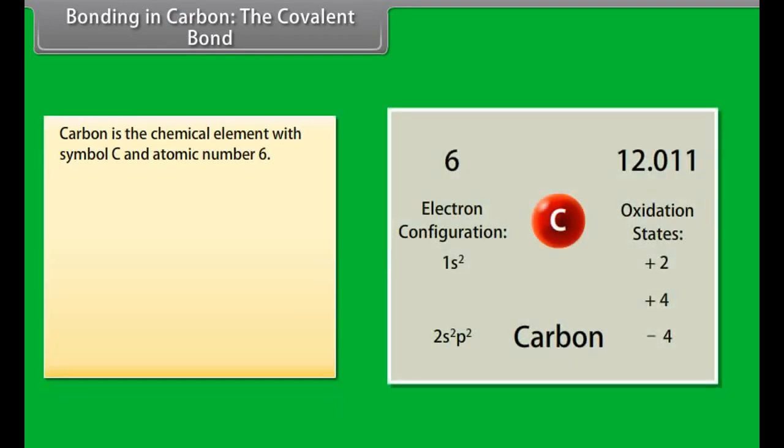Carbon is the chemical element with symbol C and atomic number 6. As a member of group 14 on the periodic table, it is non-metallic with 4 electrons available to form covalent chemical bonds.